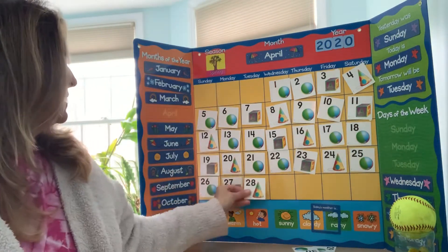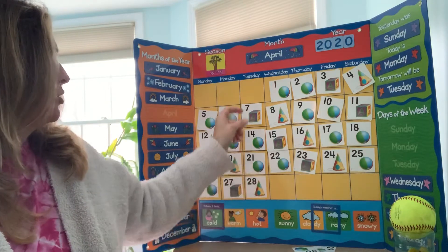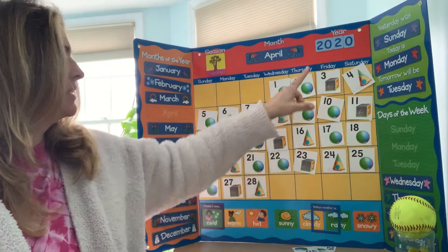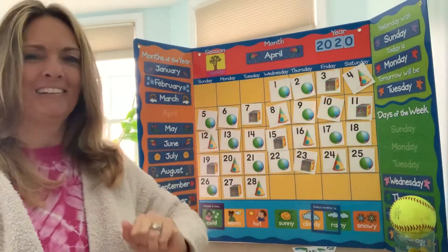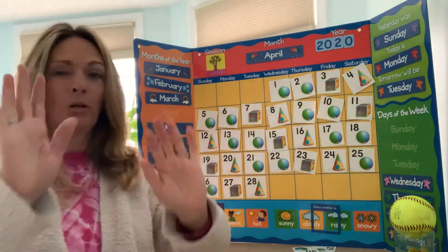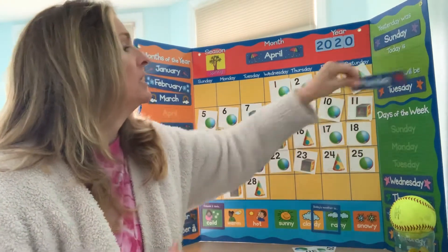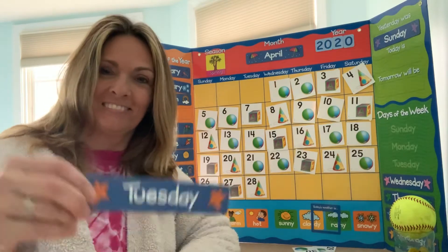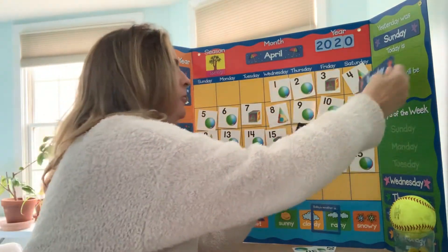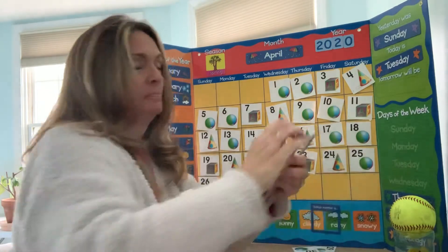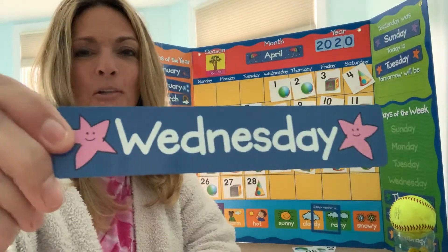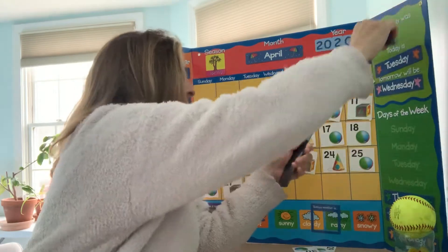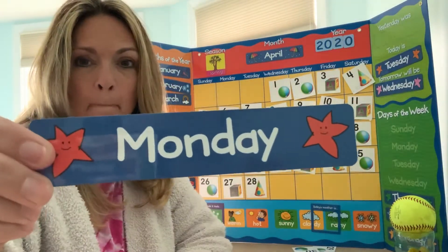Good job. Today is Tuesday, April 28th, 2020. Excellent job. Mirror words: Today is Tuesday. Tomorrow will be Wednesday. And yesterday was Monday.